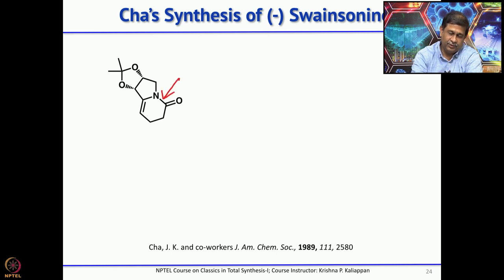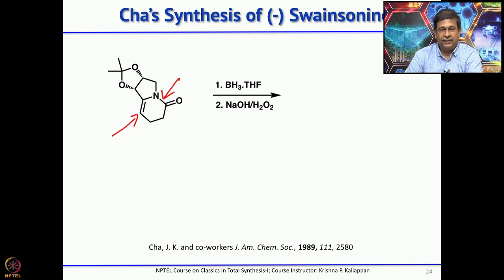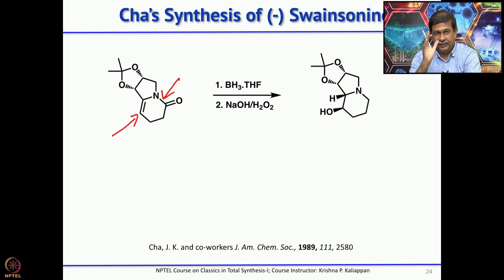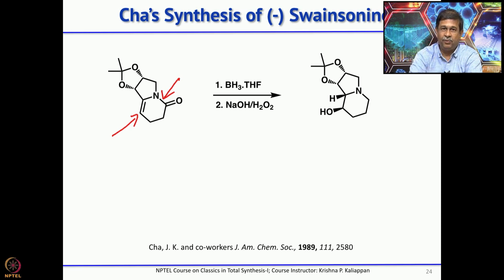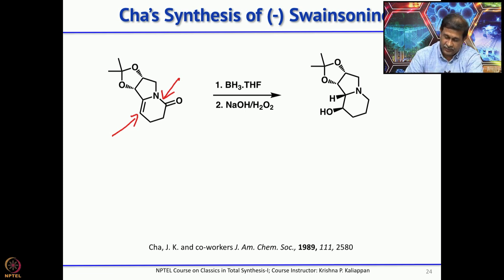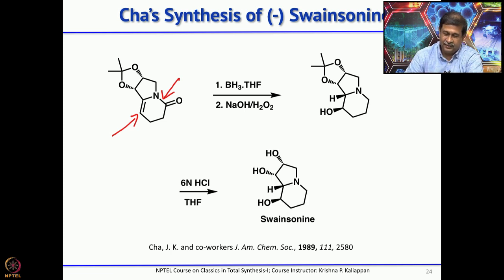What needs to be done is to remove the carbonyl group and perform hydroboration — both are done in one pot. When you treat with borane-THF, it converts the lactam to the corresponding amine and also hydroborates the double bond if present. Both reactions are done in one pot to give this product. Then simply removal of the acetonide gives swainsonine.